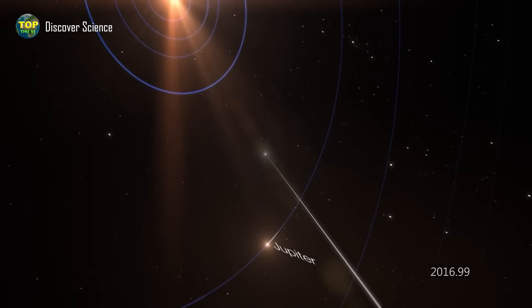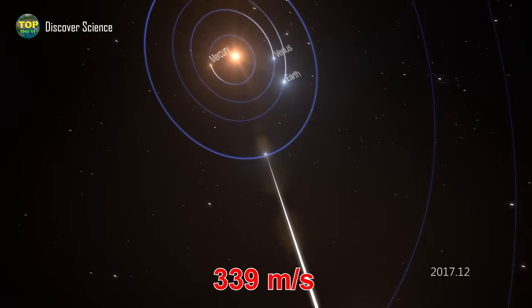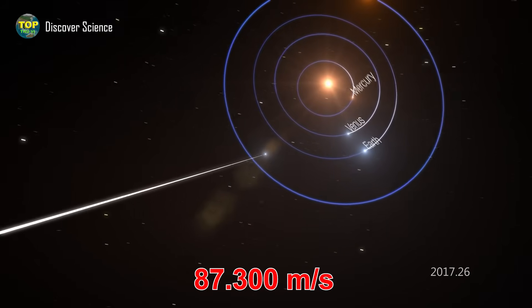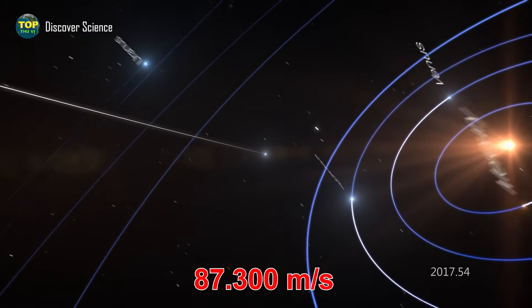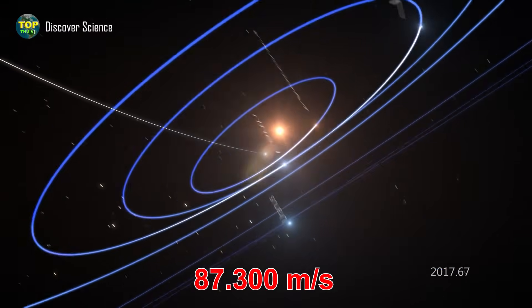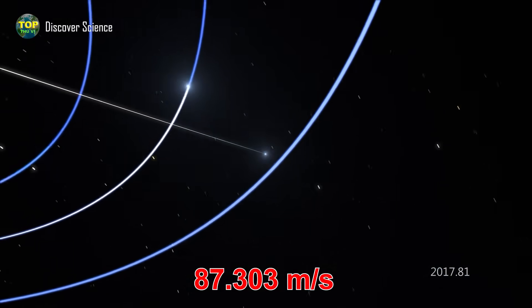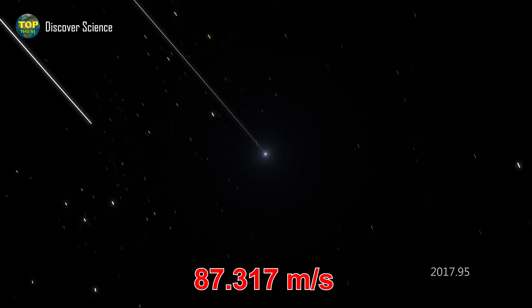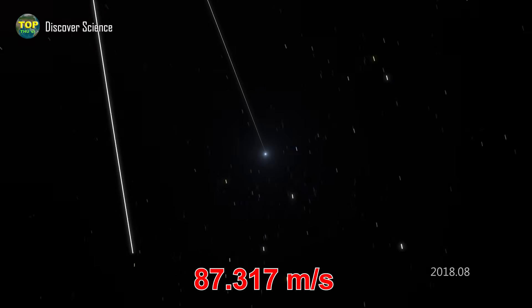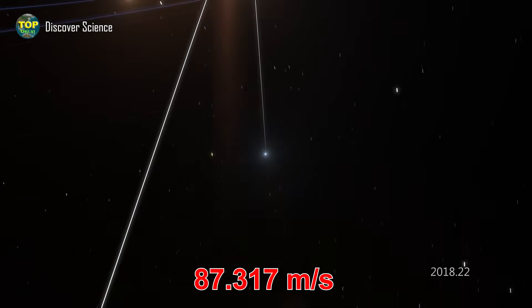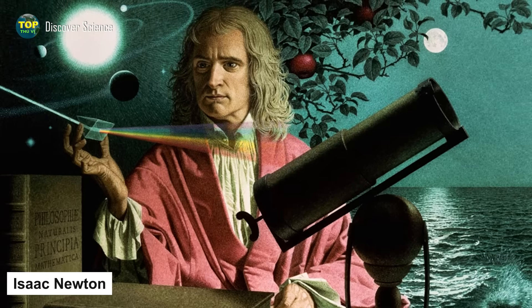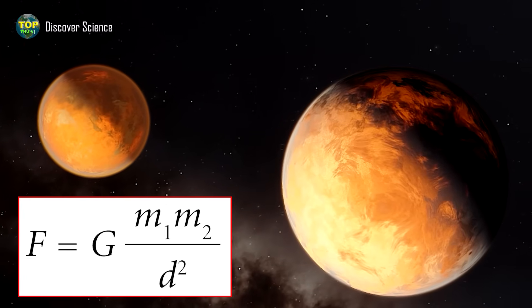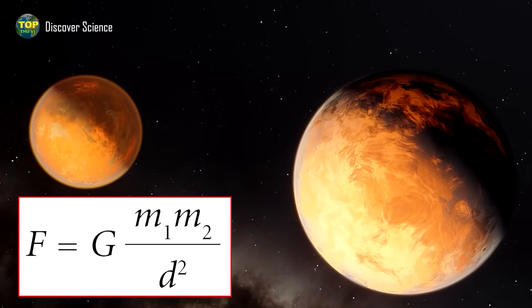Specifically, 'Oumuamua's initial speed when entering the solar system was around 87.3 kilometers per second relative to the sun. As it passed its closest point to the sun, it accelerated as usual. However, afterward, instead of slowing down, it continued to accelerate by 17 meters per second. Though this may seem like a small number, it was enough to cause a stir in the scientific community. This behavior contradicted Newton's law of universal gravitation.